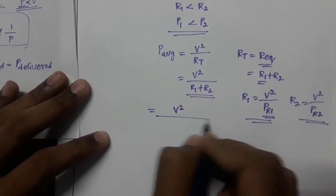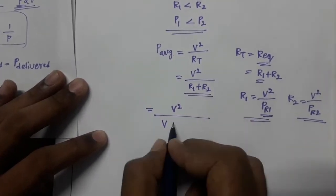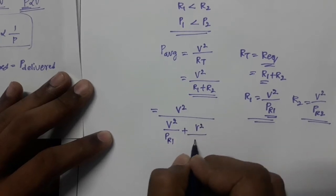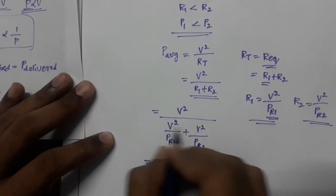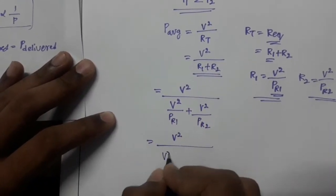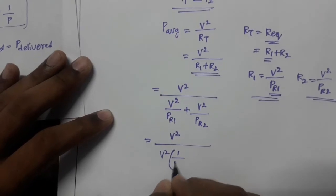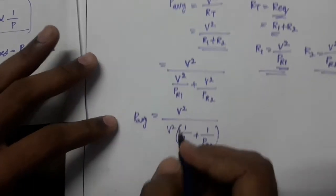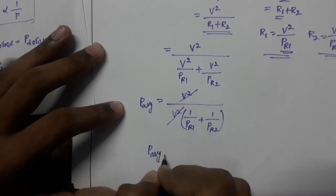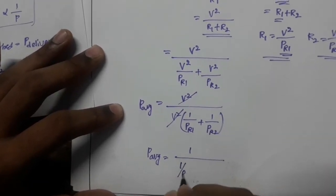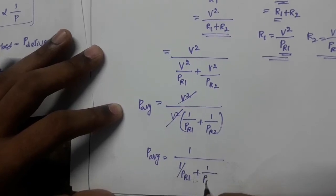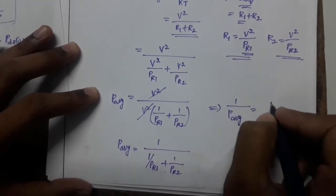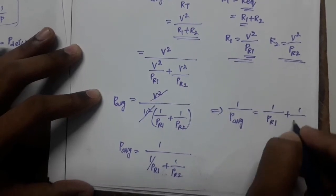The V² terms cancel, so P average equals 1 divided by (1/PR1 + 1/PR2). By solving this, 1/P_average equals 1/PR1 + 1/PR2. Therefore P average equals (PR1 × PR2) divided by (PR1 + PR2).